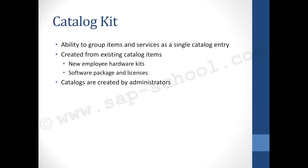The catalog kit is the ability to group items and services as a single catalog entry. It is created from existing catalog items — for example, a new employee hardware kit or a software package and licensing services. Kits can be created by administrators, which restricts individual selling of those items so they are always sold as a group. This eases navigation for new users and allows bundling discussions with suppliers, saving transportation costs and enabling bulk discounts.